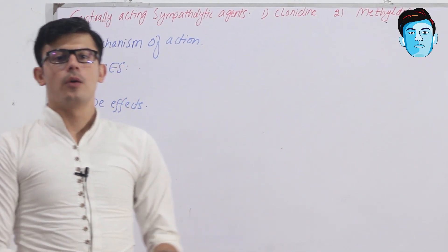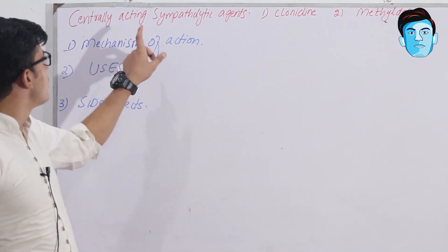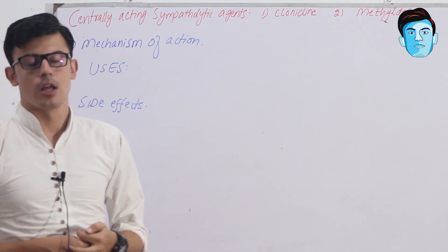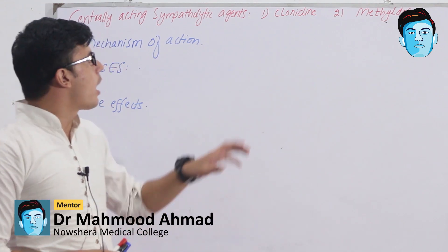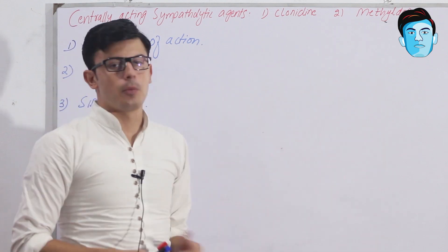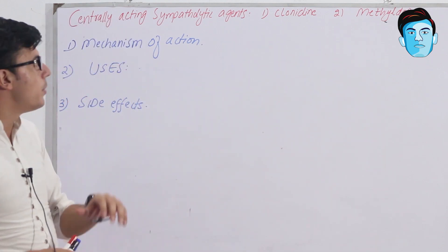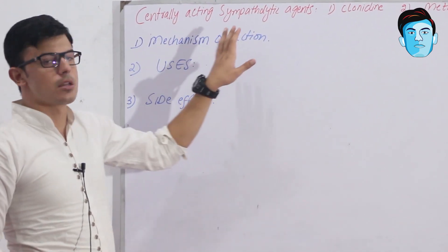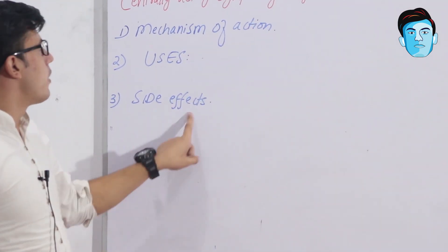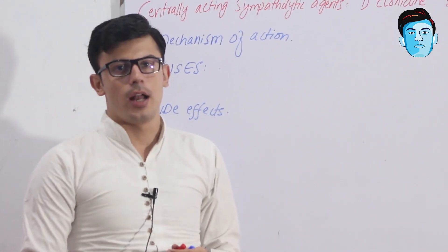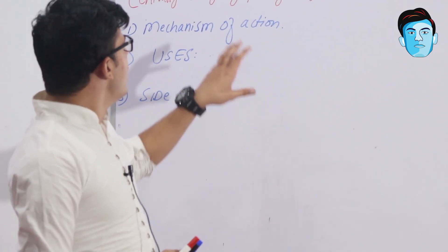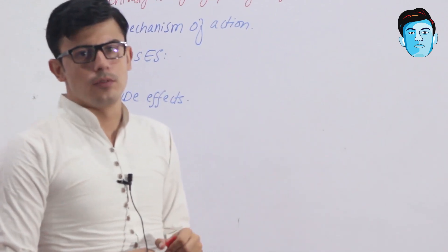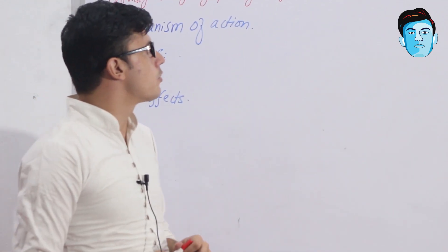Assalam alaikum doctors. Today our topic of discussion is all about the centrally acting sympatholytic agents of the antihypertensive drugs. In this class we have clonidine and methyl dopa. In this lecture we will be focusing upon the mechanism of action, uses, and side effects of the centrally acting sympatholytic agents.